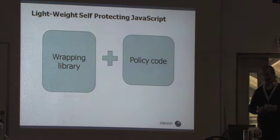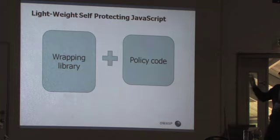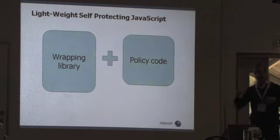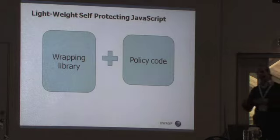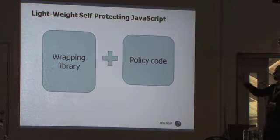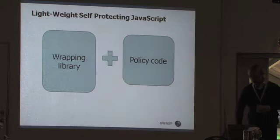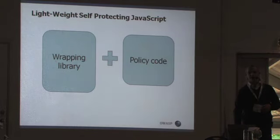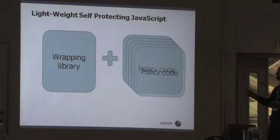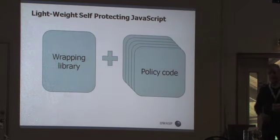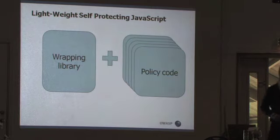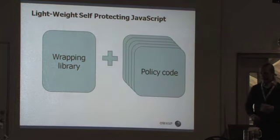The lightweight self-protecting JavaScript consists of a wrapping library that provides the functionality of wrapping built-ins, and some policies which enforce the behavior. The policy code is site-specific, so we will have different policies for different sites. One site might allow alert to be executed five times, and another site might not care at all about whether alert is executed or not.